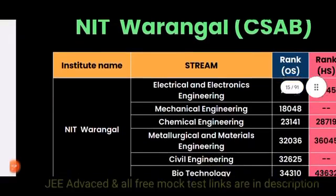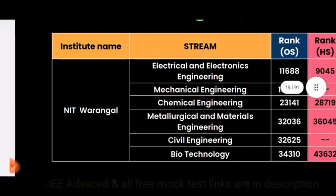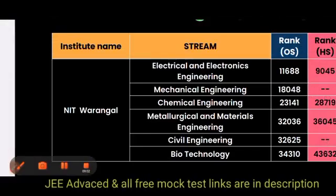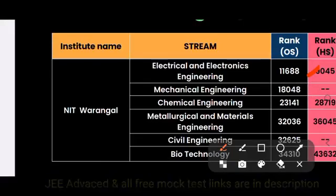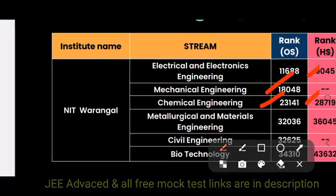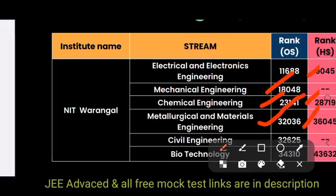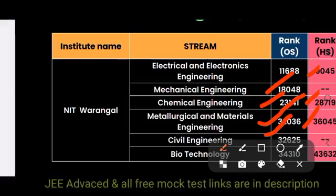For NIT Aurangabad through CSAB, Electrical and Electronics Engineering is 11,688 for other state and 9,045 for home state. Mechanical is 18,000. Chemical is 23,000 for other state and 28,000 for home state. Metallurgical and Materials Engineering is 32,000 for other state and 36,000 for home state. Civil is 32,000 for other state. Biotech is 34,000 for other state and 43,000 for home state.